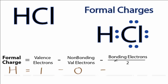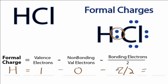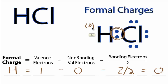And then we'll subtract the bonding electrons. These two valence electrons right here are involved in a chemical bond, so we have two of those, but we're going to divide that by two. So we have one minus zero minus one — a formal charge of zero for the hydrogen, and we'll put that in parentheses right next to it.